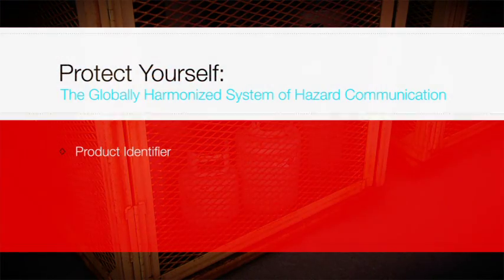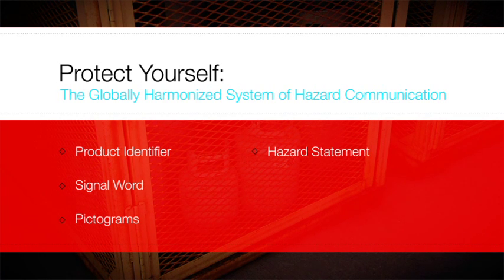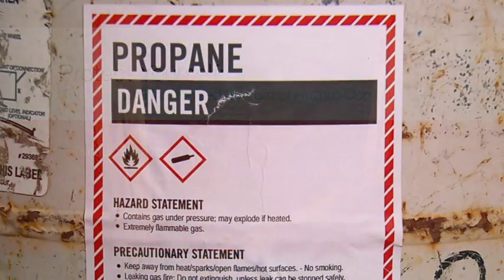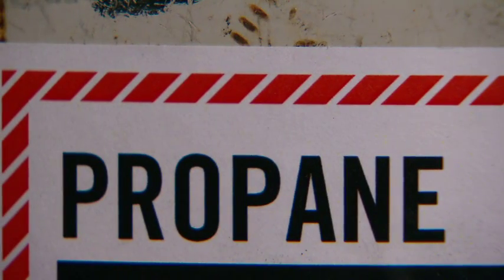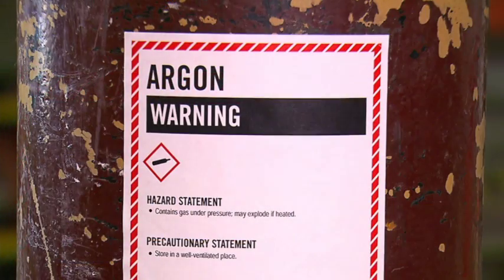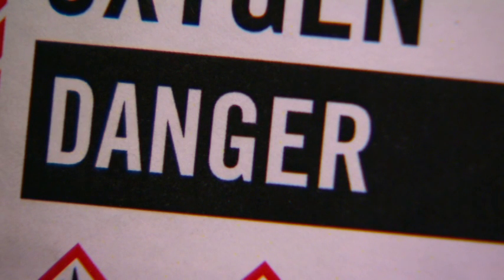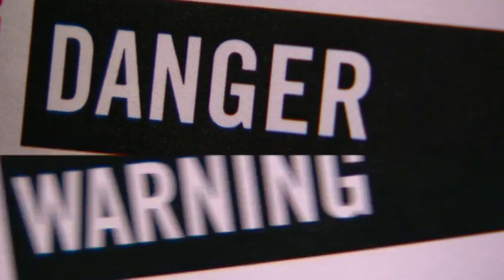Each label will have a product identifier, a signal word, one or more pictograms, a hazard statement, a precautionary statement, and contact information. The product identifier is the name or number used for a hazardous chemical on a label or in a safety data sheet, so the user can quickly identify the chemical substance. A signal word is one word used to alert you to the severity of the hazard. The two signal words are danger or warning. Danger is used for more severe hazards.